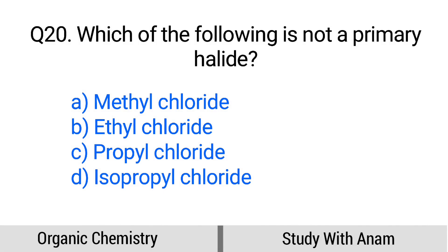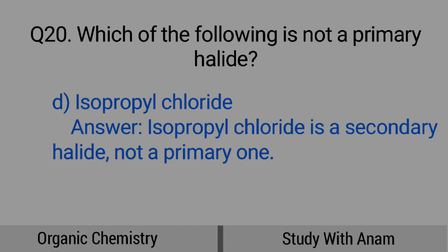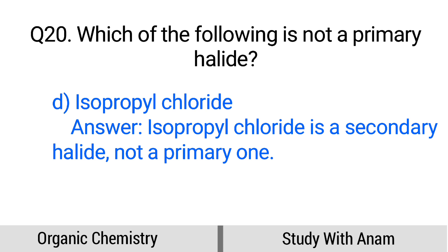Question number 20. Which of the following is not a primary halide? Option A: Methyl chloride, B: Ethyl chloride, C: Propyl chloride, D: Isopropyl chloride. The correct option is option D, Isopropyl chloride. Isopropyl chloride is a secondary halide, not a primary one.